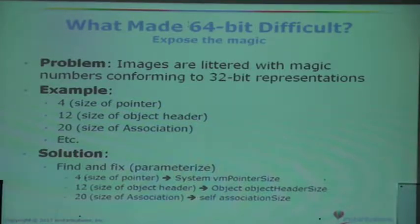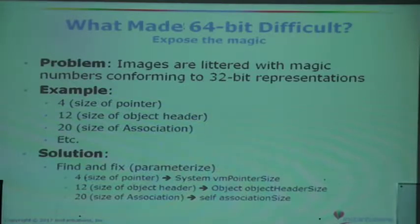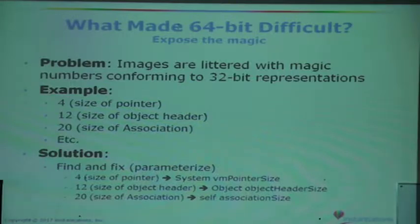12 is the size of an object header; 20 is the size of an association. So we had to survey the entire image, find all of these magic numbers — which isn't the easiest thing in the world — determine which ones were important to 32 versus 64-bit, and parameterize them. Now we have things like objectHeaderSize and VMPointerSize as methods that adapt within the method to whether you're running 32 or 64-bit. In terms of image processing to get to 64-bit, that was one of the most time-consuming efforts we went through.